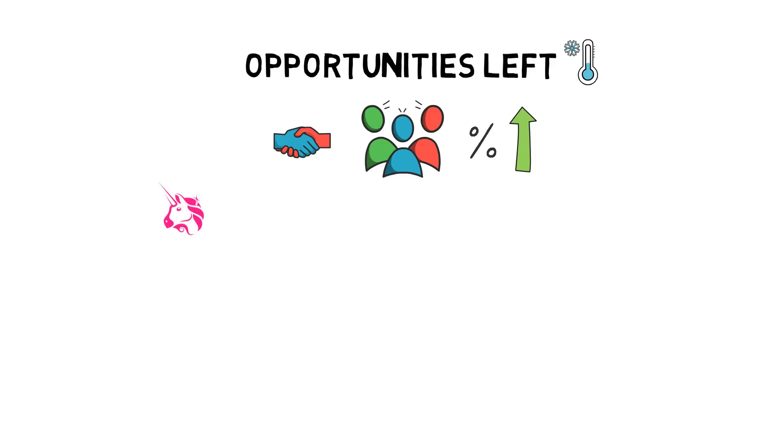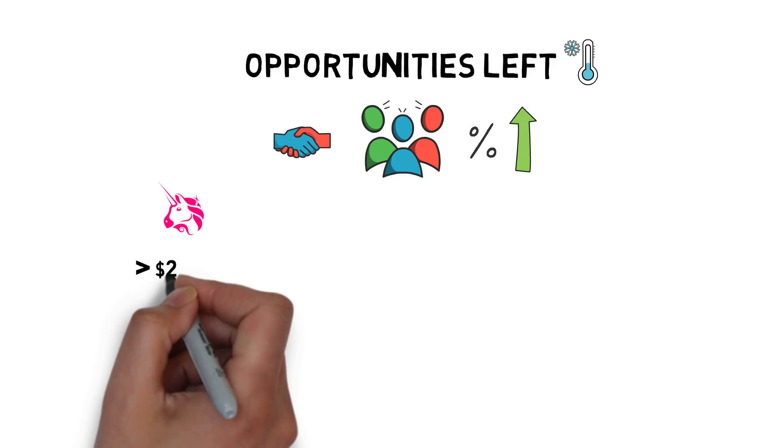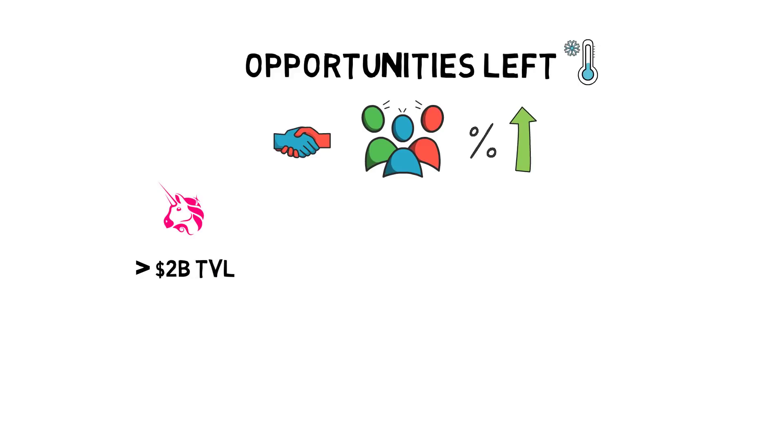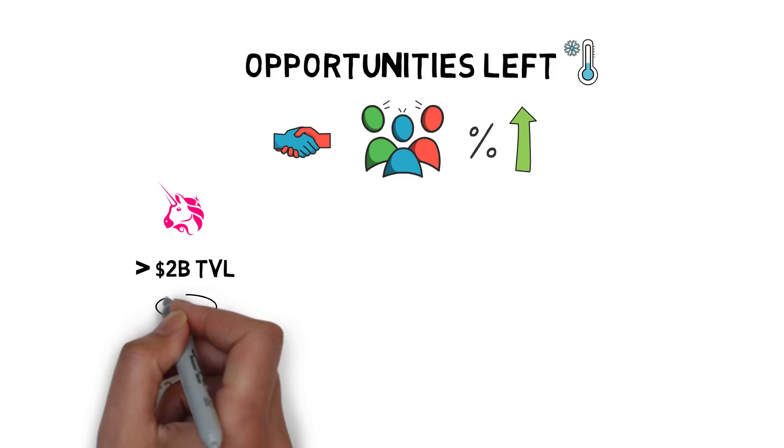Uniswap's UNI token liquidity mining program with over 2 billion dollars of total value locked is probably the safest option at the moment. It offers between 12 and 24% APY depending on the liquidity pool.